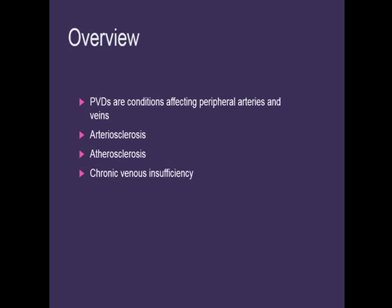Atherosclerosis is where deposits obstruct or harden the arteries — more of your plaque or different things deposited inside the arteries. So arteriosclerosis deals more with the outside, the actual structure of the arteries, and atherosclerosis deals with things that build up on the inside.